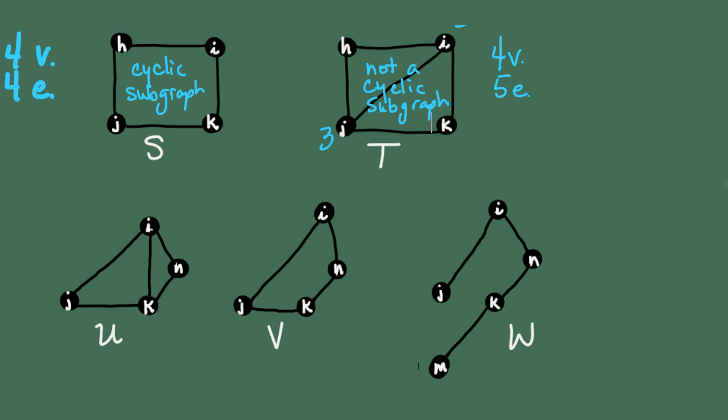Let's look at subgraph U. Do you think it's a cyclic subgraph? If you said no, you're correct, because once again, we have four vertices, but we have five edges. And we can also observe that vertices I and K don't have degree two.